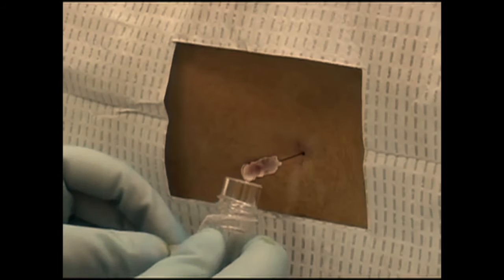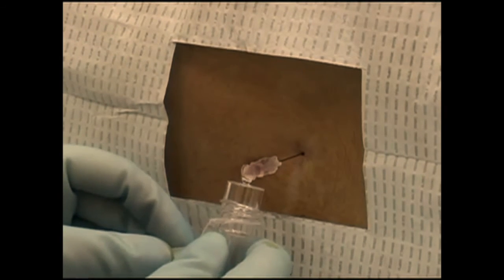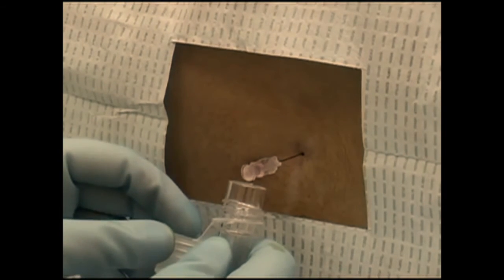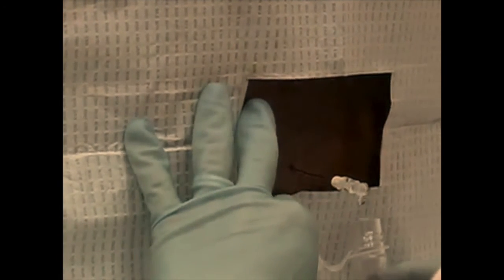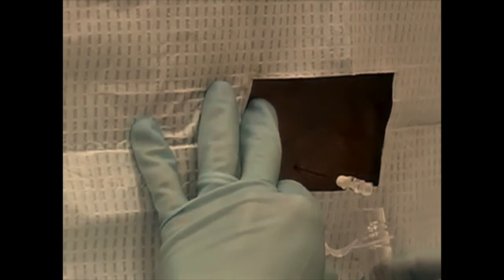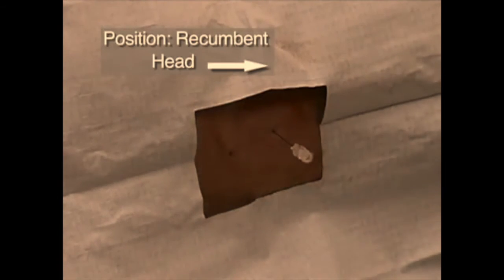If the lumbar puncture is traumatic, the cerebrospinal fluid may be tinged with blood. As additional fluid accumulates in the barrel, the fluid should become clear, unless the source of the blood is a subarachnoid hemorrhage.